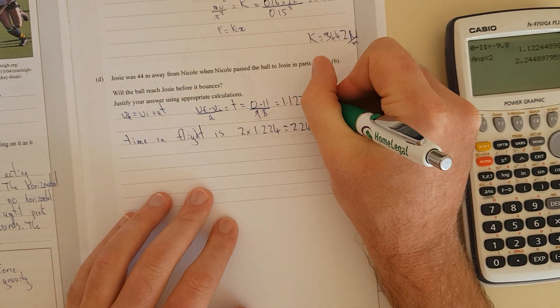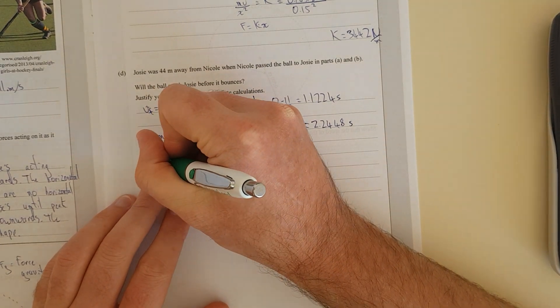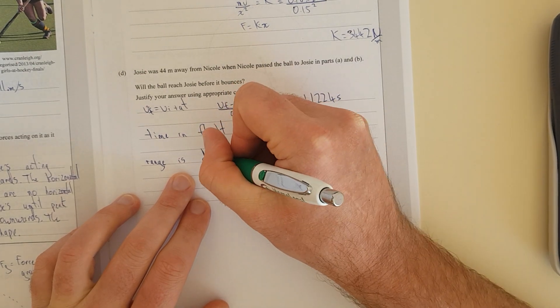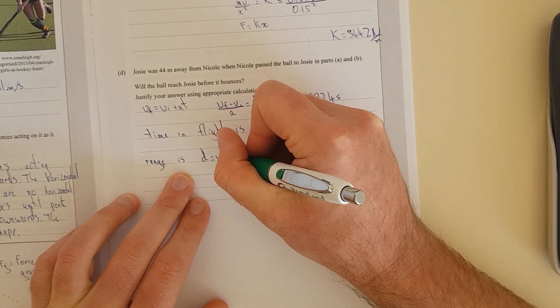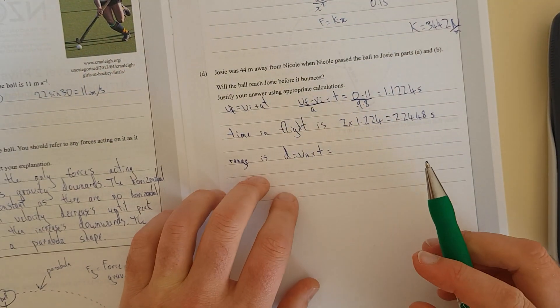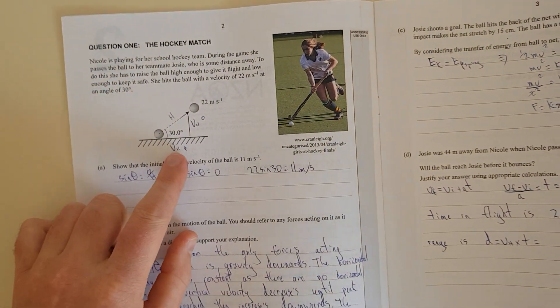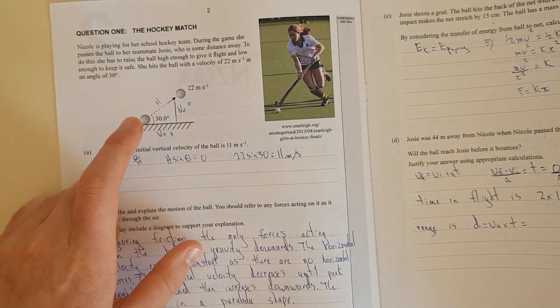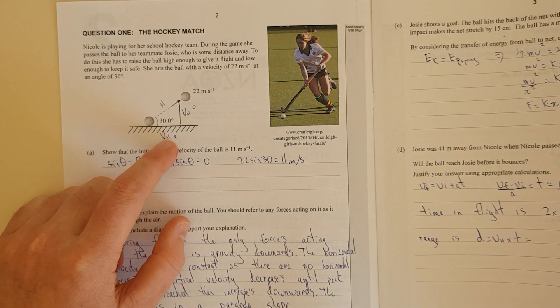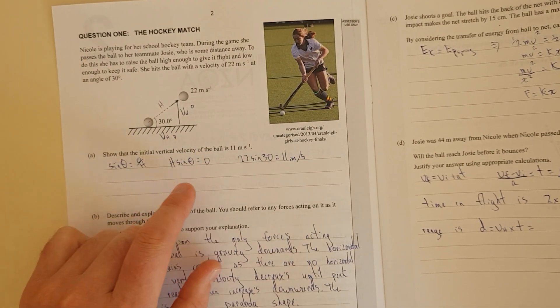The range is basically the distance equals velocity times time. It's horizontal velocity times time in the flight. I need to figure out what the horizontal velocity is. We have the hypotenuse and we're trying to find the adjacent, so we use cosine. Cos theta equals adjacent over hypotenuse, so a equals h cos theta.